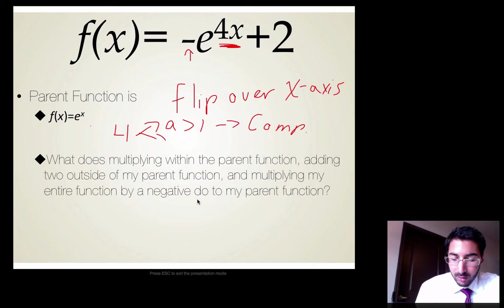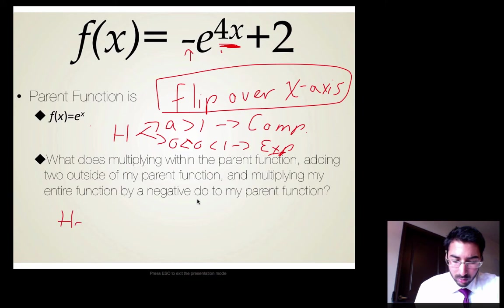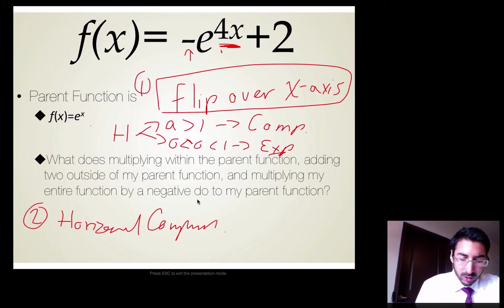What kind of horizontal transformation? Well, once I know it's horizontal, I know that if a is greater than 1, if that number is greater than 1, it's going to be a compression. And if a is between 0 and 1, then it's going to be an expansion. So I'm going to look up here. 4 is greater than 1. It's within the parent function. So this is going to be a horizontal compression. That's 1, that's 2. What's my third?